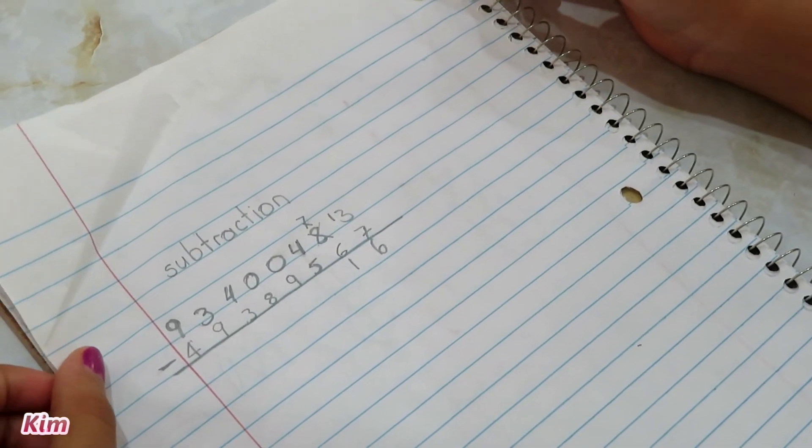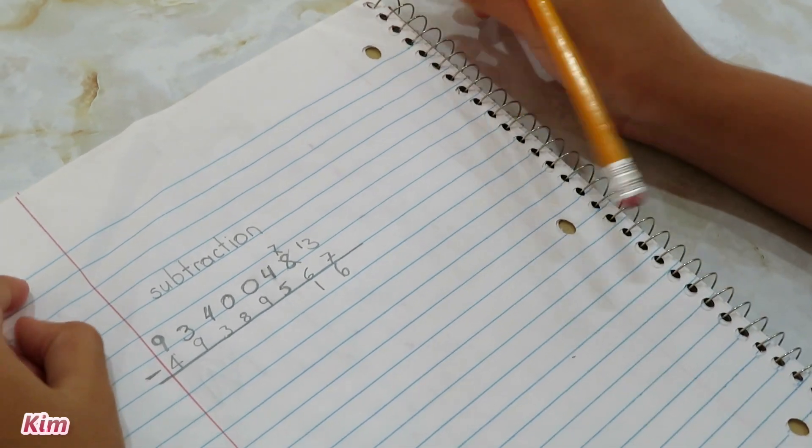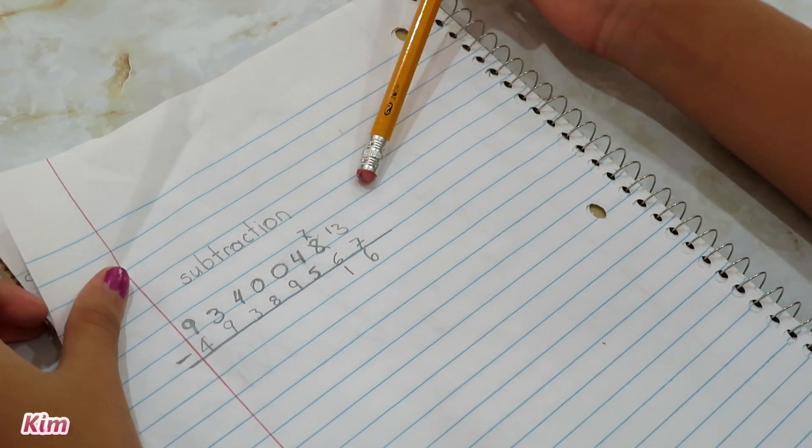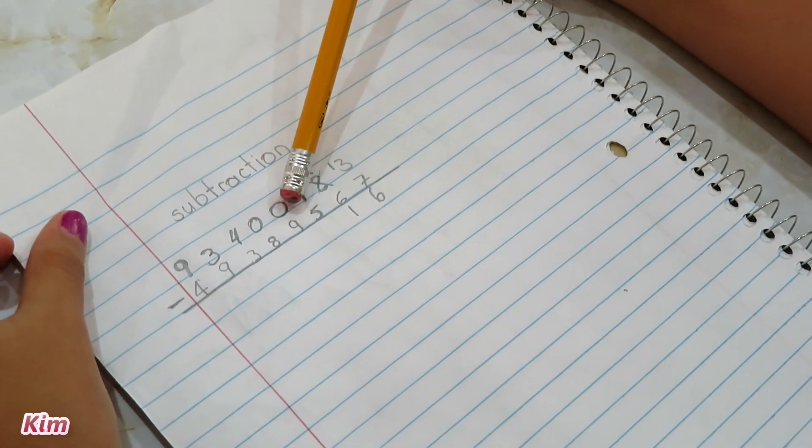Now we do 4 minus 5. We can't do that because 4 is less than 5, so we have to borrow. Usually we borrow from the next number, but here we can't because it's 0. So we have to go to the next number.